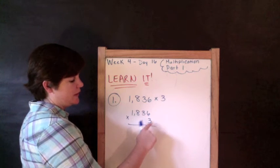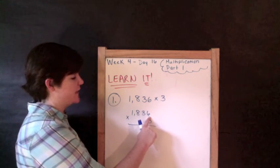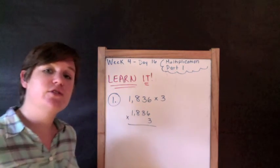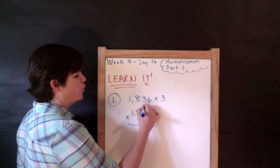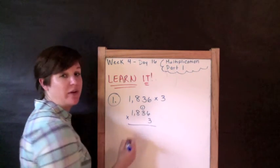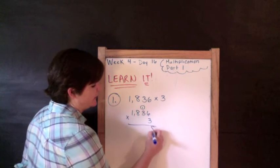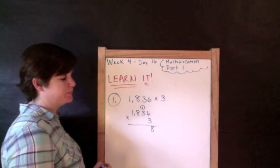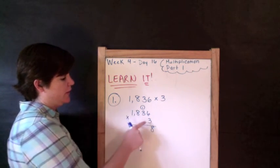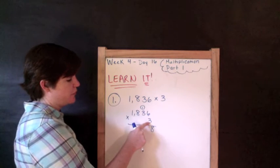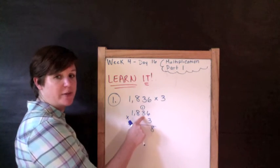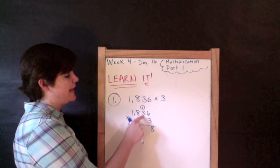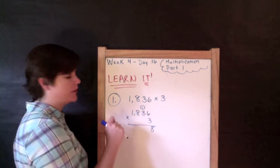So you're going to start here. 3 times 6 is 18. 18 is a two-digit number, so you're going to put the 1 up here, and I like to circle it that way I don't forget about it, and the 8 down here. Okay, now moving on: 3 times the tens place, 3. 3 times 3 is 9, and now we add the number up top.